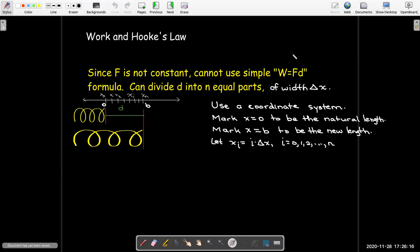And then we'll label each of these divisions as x1, x2, and so on, up to xn, just as we've done before. And so that means that x sub i is i times delta x.